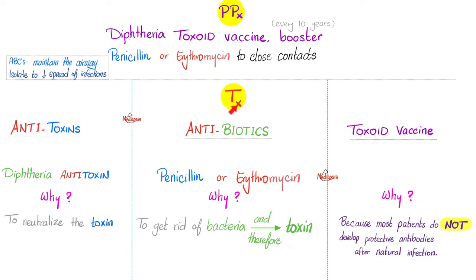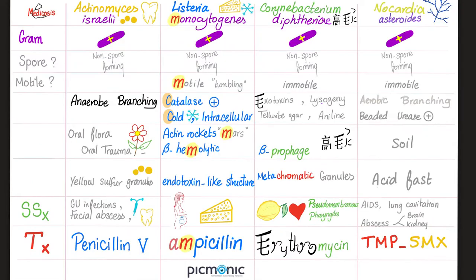A common question: does natural infection give complete natural immunity? Not necessarily. In fact, most patients who develop diphtherial disease do not develop protective antibodies after natural infection. So you will still need the toxoid vaccine.